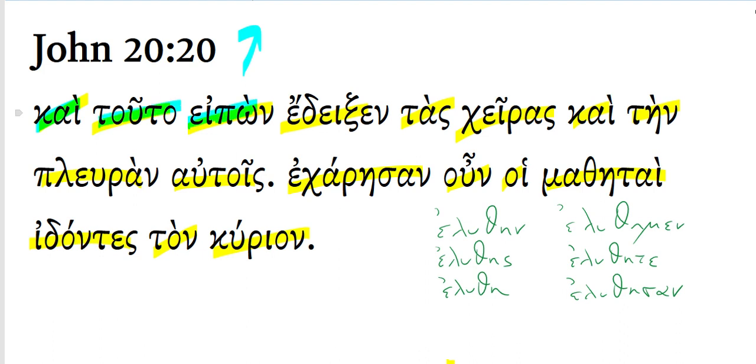and having said this, this is an aorist participle. It's building on the second aorist stem of Lego. The second aorist stem of Lego is apon. So we have that second aorist stem. Then we have present participle endings for a second aorist stem. This is an aorist active participle.